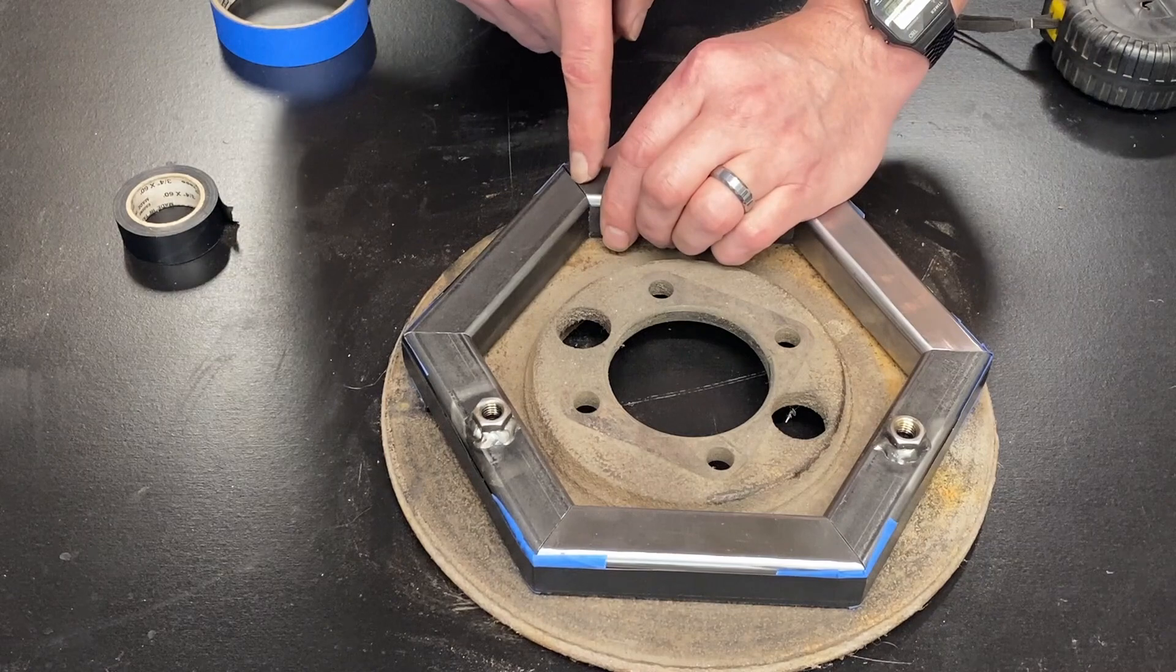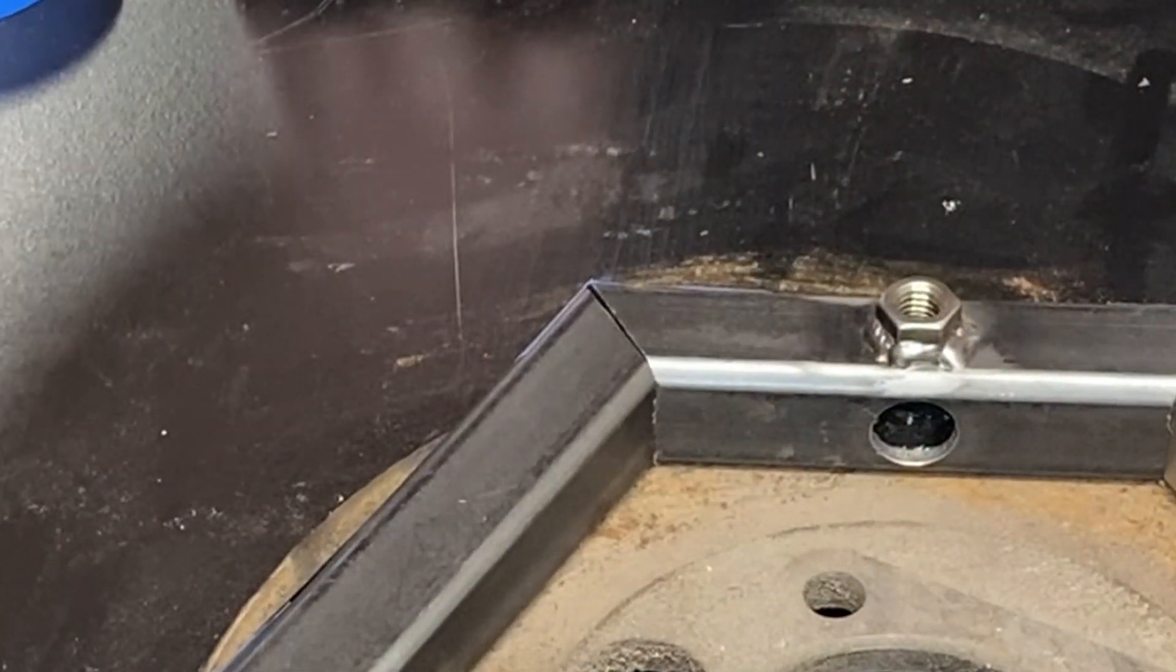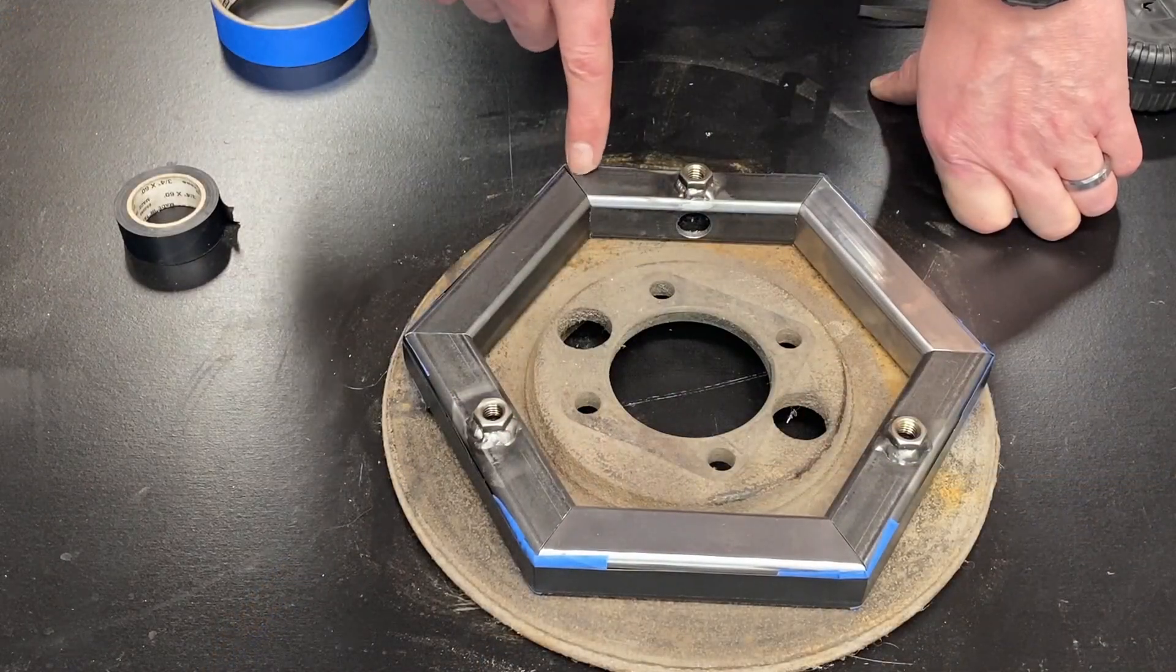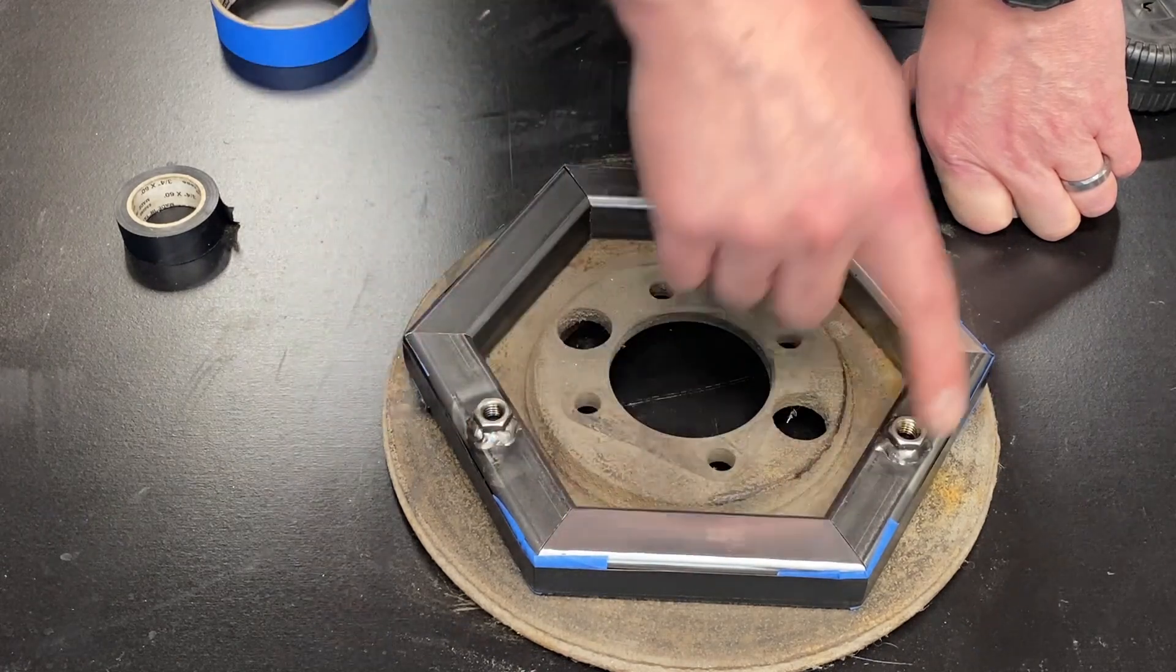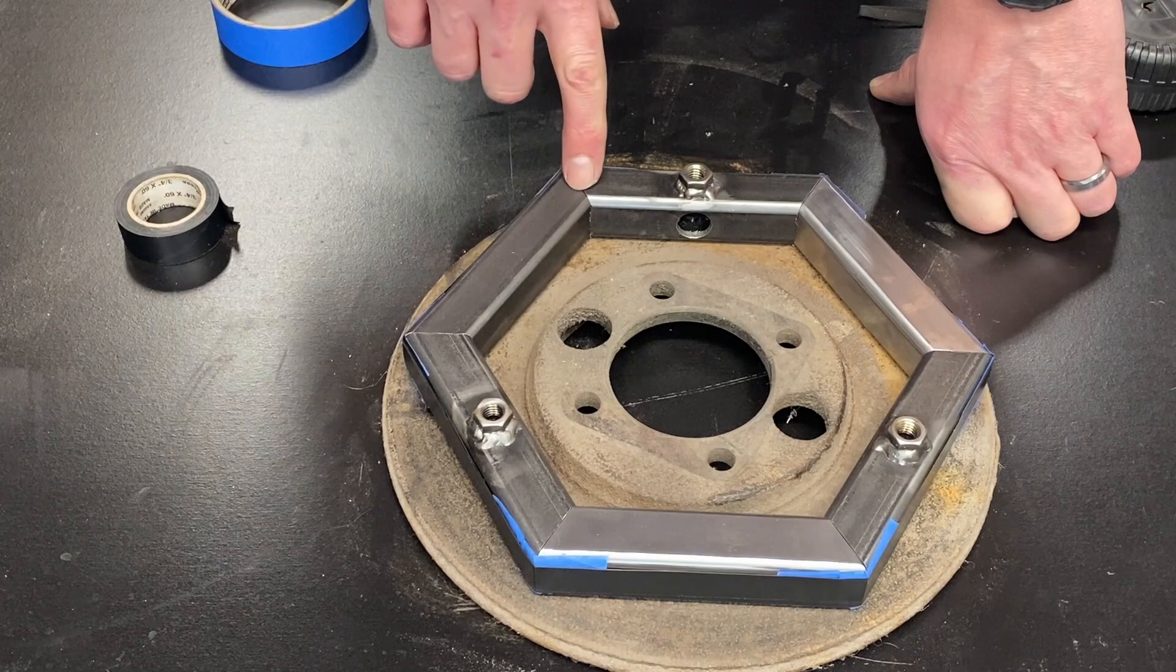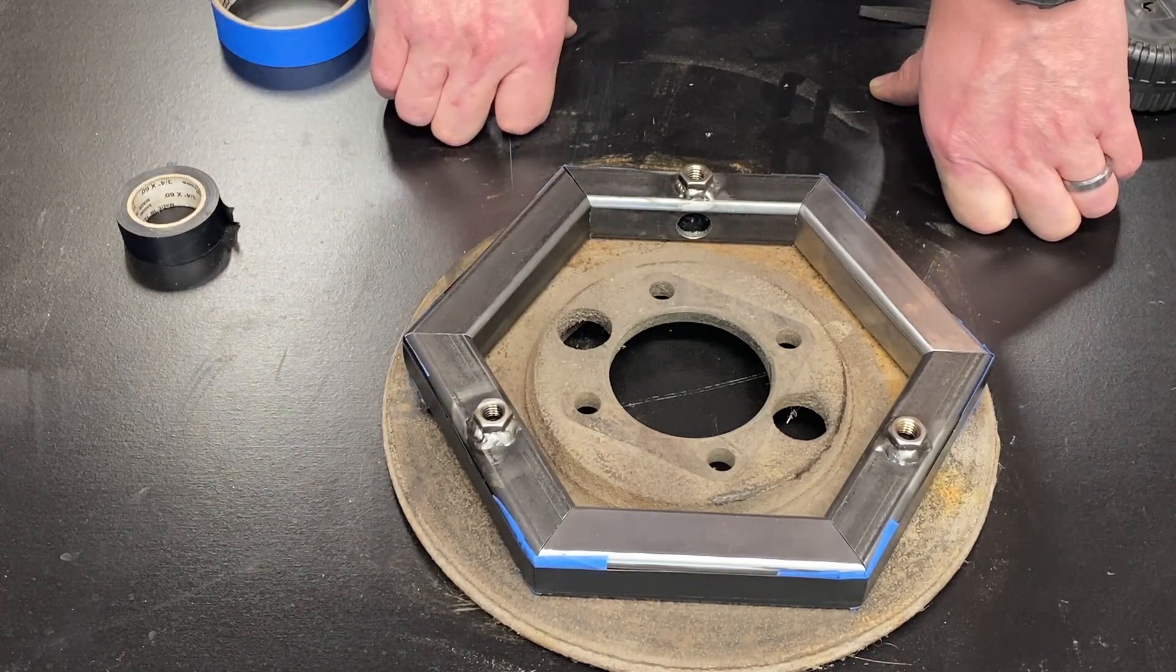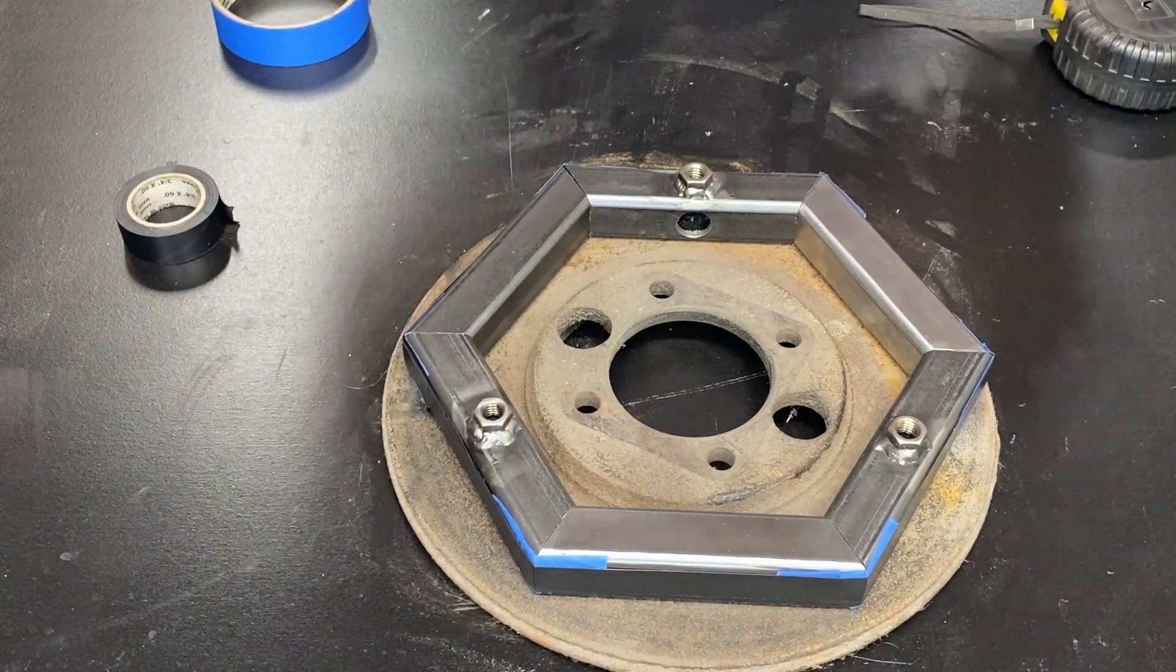Now, you can see right here, we have a slight gap. And that's where the cut wasn't 100% accurate. But by doing this technique, it doesn't matter that that cut's not 100% accurate, because it is held into a perfect hexagon. And so we can now fill in that gap with weld, and our shape is going to be true. This stretchy compression, it gets us exactly where we need to be.